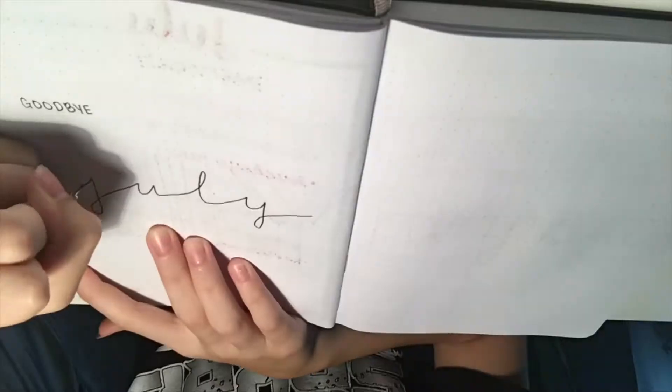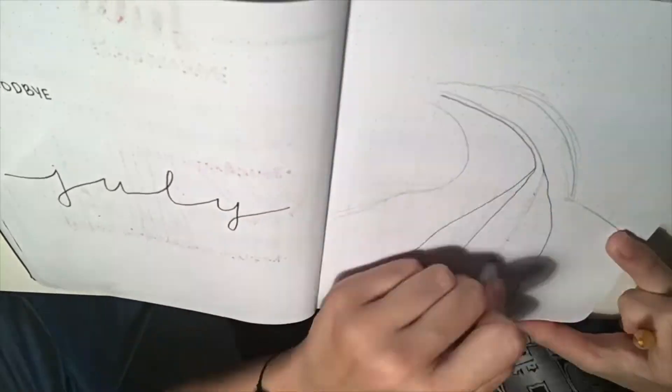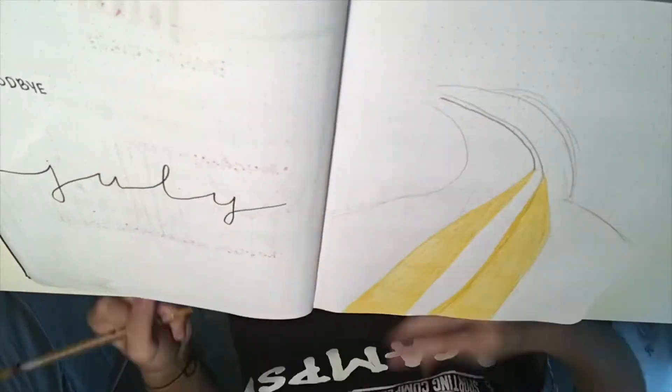Alright guys, starting off I wrote Goodbye July on the left hand side in cursive with a fineliner. On the right side, I began drawing the cover of what's going to be my theme this month.